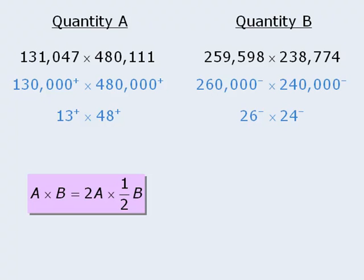Now, why would we want to apply this rule here? Well, notice that if we multiply 13 by 2, we get 26. And when we multiply 48 by one-half, we get 24. This suggests that our rule here might make our two quantities look more alike, and this could come in handy.